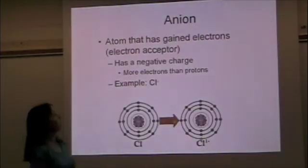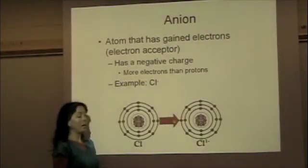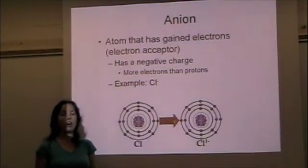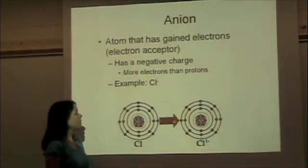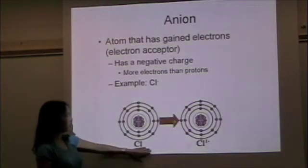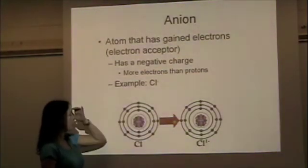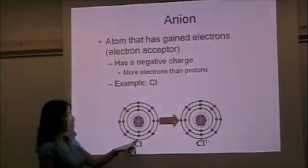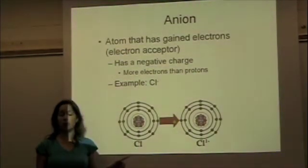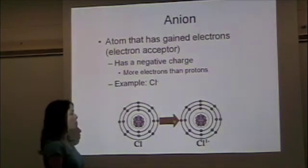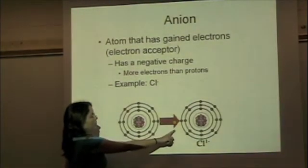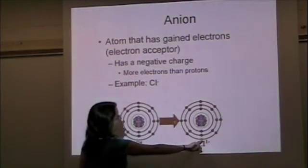The other option is that an atom can gain electrons. When it gains electrons, it becomes a special ion called an anion and it has a negative charge. This is chlorine in its normal form, and in the third shell, chlorine only has 7 electrons. It would rather have 8 because that would make it more stable. Chlorine can gain an electron, and here's that extra electron.